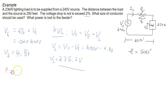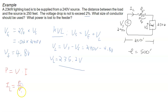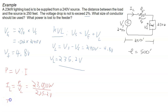From P equals V times I, we get I equals P divided by V. So the load current IL equals the power of the load divided by the voltage drop across the load: 23,000 watts divided by 235.2 volts, which gives a current of 97.79 amps through the whole circuit.